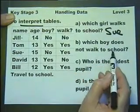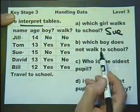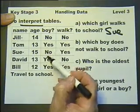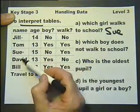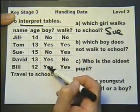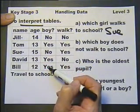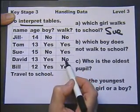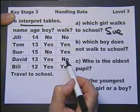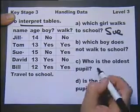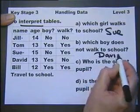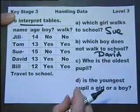'Which boy does not walk to school?' The boys are the ones marked 'yes' in the boy column — Tom, David, and Bill. Which of those boys does not walk to school? David doesn't — David is marked 'no' for walking to school, and he's a boy, so he goes some other way.